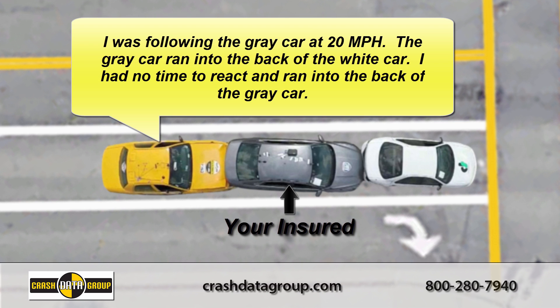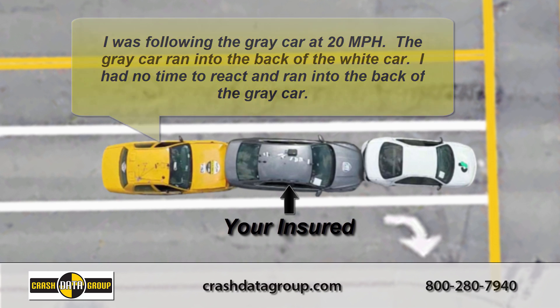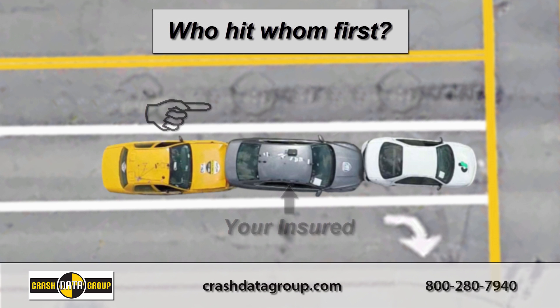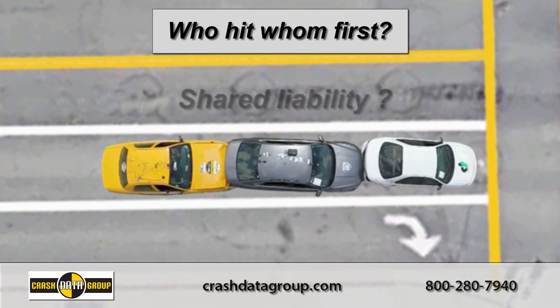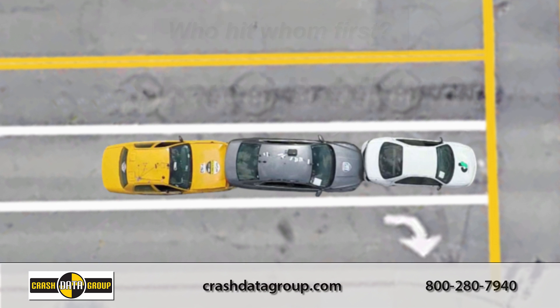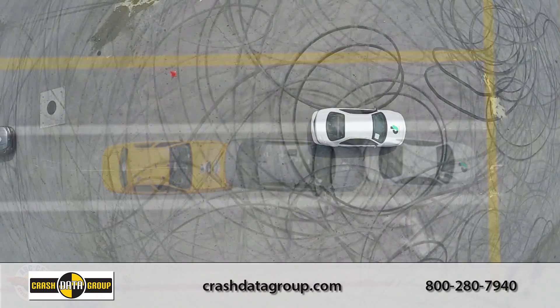The driver of the yellow car stated they were driving behind your insured at about 20 miles per hour. They said your insured ran into the back of the white car so suddenly that they had no time to react, and as a result ran into the back of your insured. There are no witnesses and the driver's statements are in complete conflict. Is this looking like a shared liability claim to you? Let's watch what really happened.